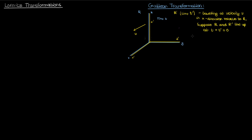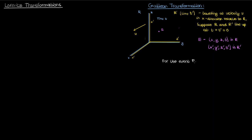At time 0 these reference frames line up perfectly. If I now put an event e over here with an x coordinate, y coordinate, z coordinate and time t in the reference frame r, and an x', y', z' coordinate with a time t' in the reference frame r', then the Galilean transformation allows me to determine the relationship between the unprimed coordinates and the primed coordinates.